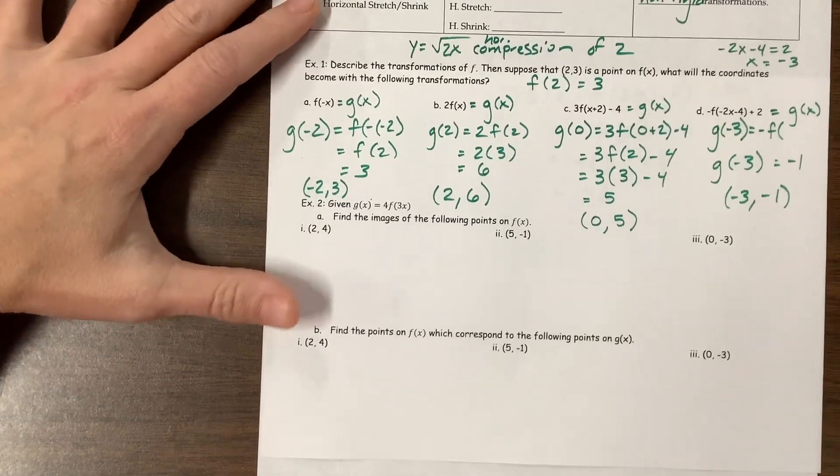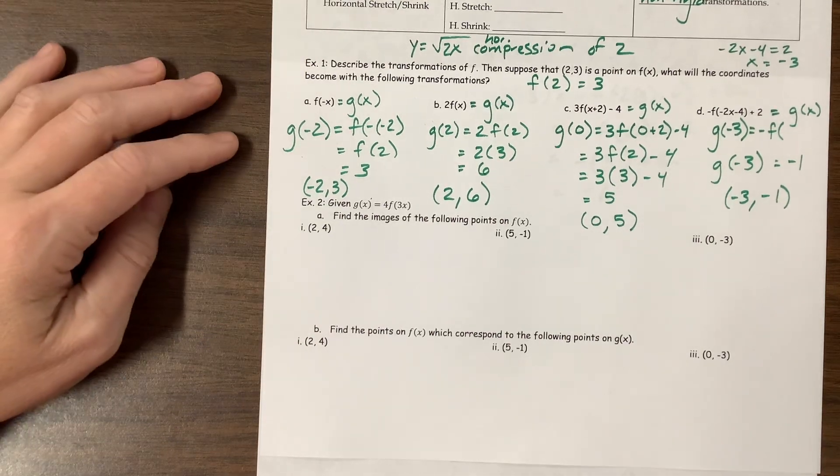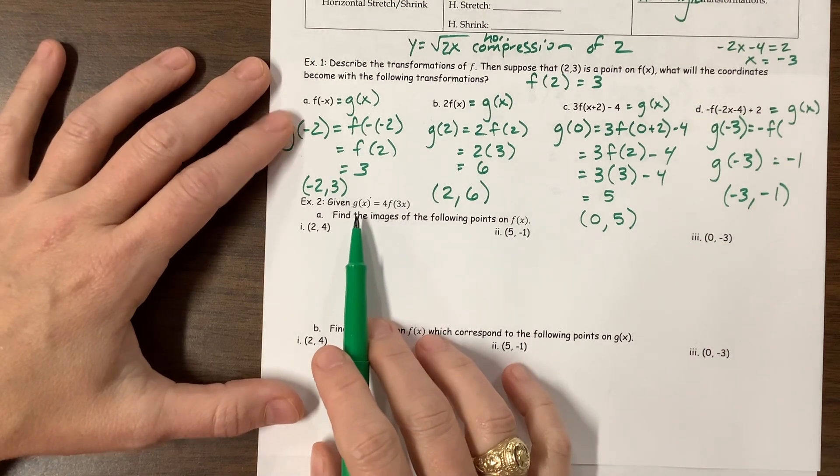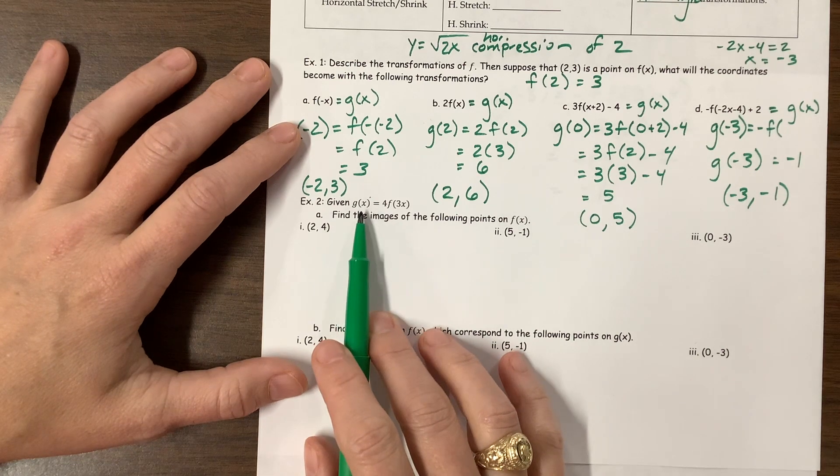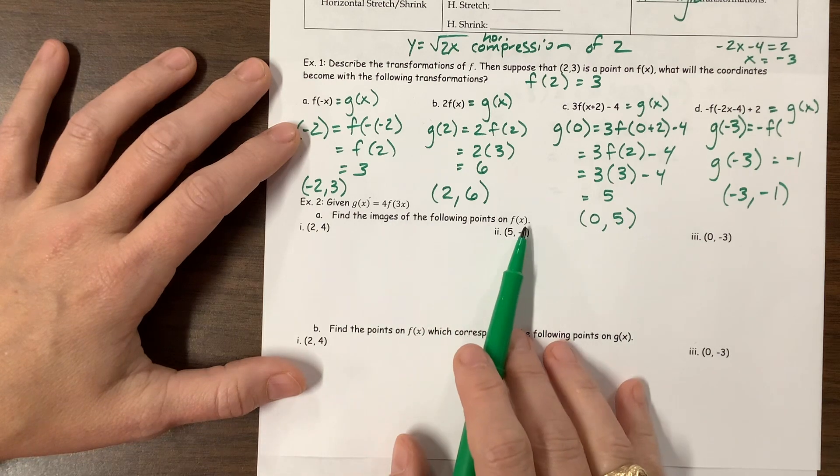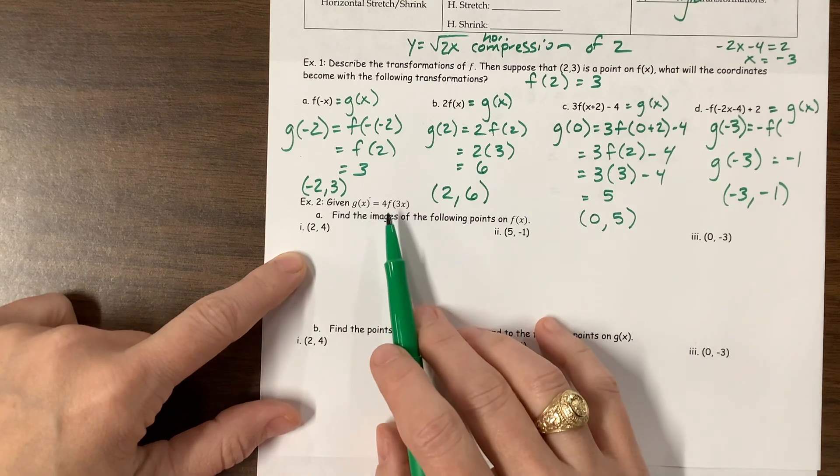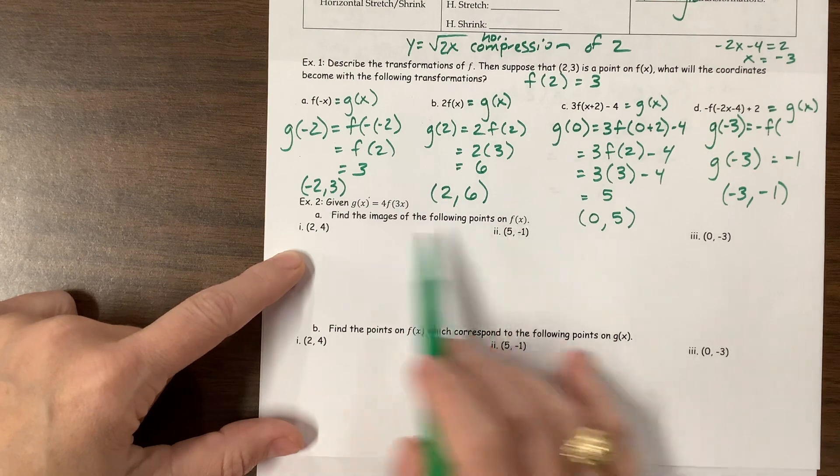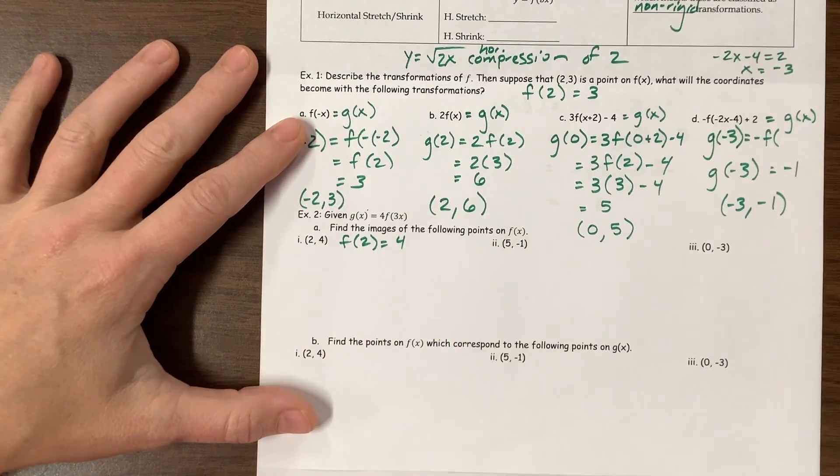Okay, and now we're going to look at some problems that do the opposite. Okay, yeah, okay. So this one they're saying, find the images of the points on f. So they're giving us, given g is equal to this in terms of f, find the image of the following points on f. These points are on f, and they want us to figure out what the corresponding point would be on g. Let me make sure I'm saying that correctly. Find the points on f. Yes, okay, this is like saying f of 2 equals 4.